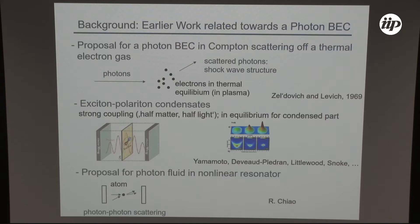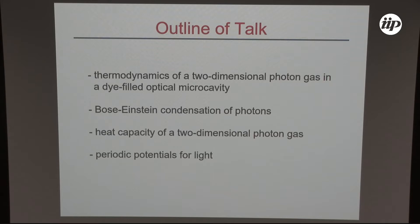This is the outline of my talk. I will speak about the Bose-Einstein condensate of photons created in an optical micro-cavity filled with dye molecules. What we do is thermalize light by absorption and re-emission events on dye molecules. One of the tricks is that we change the dispersion relation from the usual linear for photons to quadratic — that is, matter-like — in an optical resonator. I will first talk about the thermodynamics of this state, then on the experiment of Bose-Einstein condensation, and then on more recent experiments on measuring the heat capacity and on realizing periodic potentials for the light field.